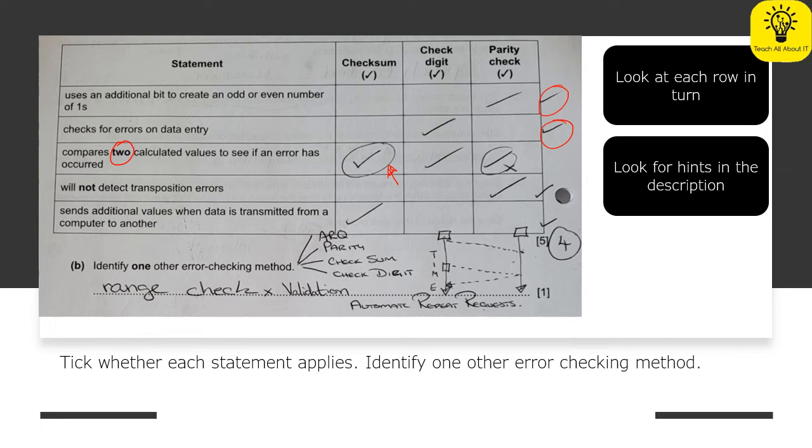Now we know that parity check only sends one value, so that's going to be a bit of a hint. And also something that will not detect transposition errors. Transposition is when you've moved it from one thing to another.